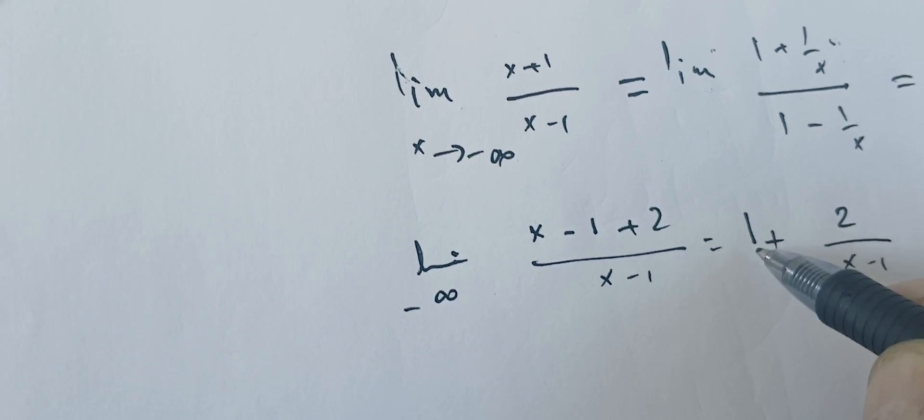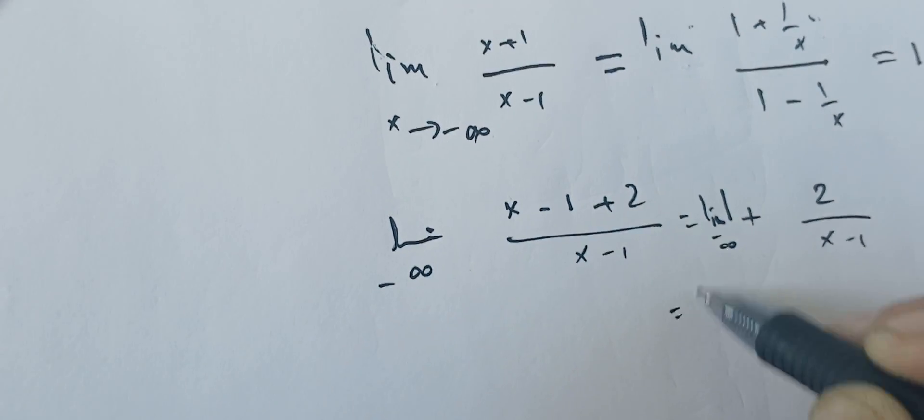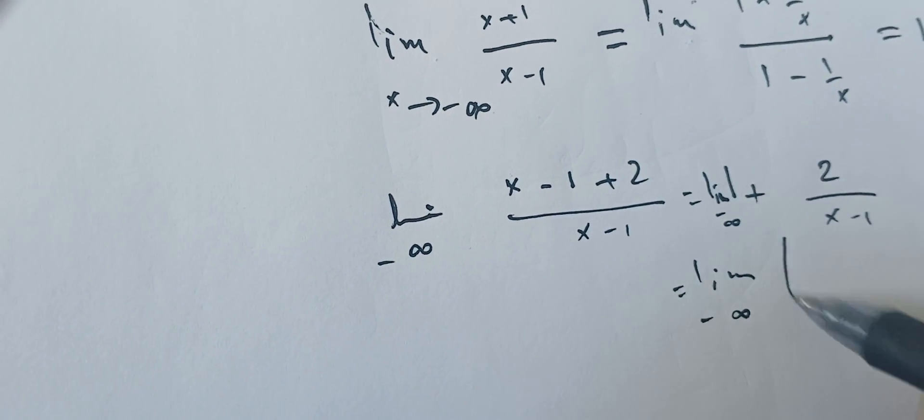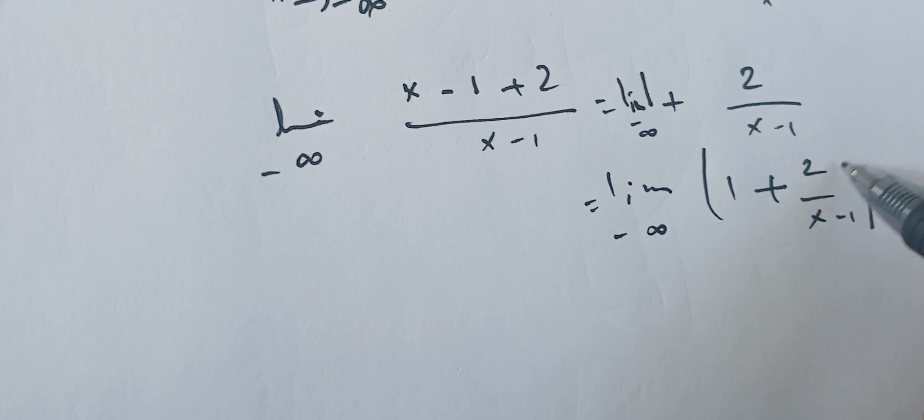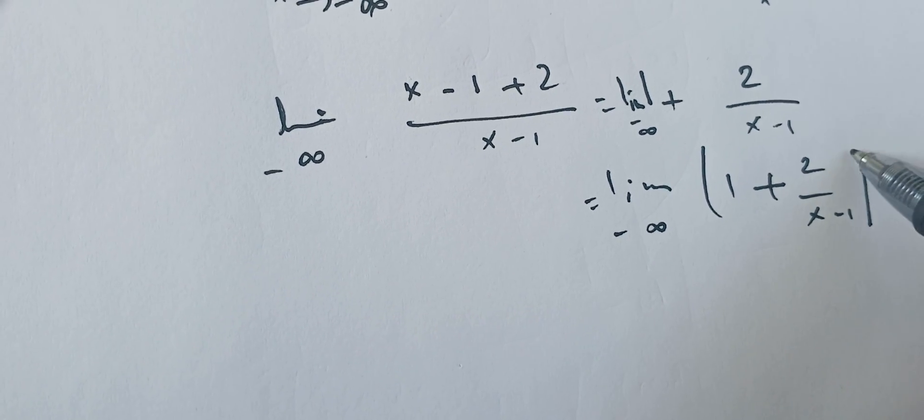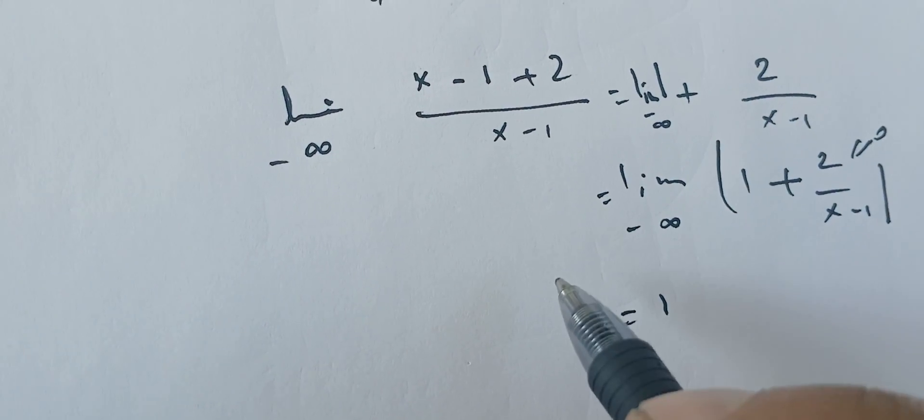Therefore, when we take the limit, the limit of 1 plus 2 over x minus 1, this one will go to 0, and I'm left with 1 only.